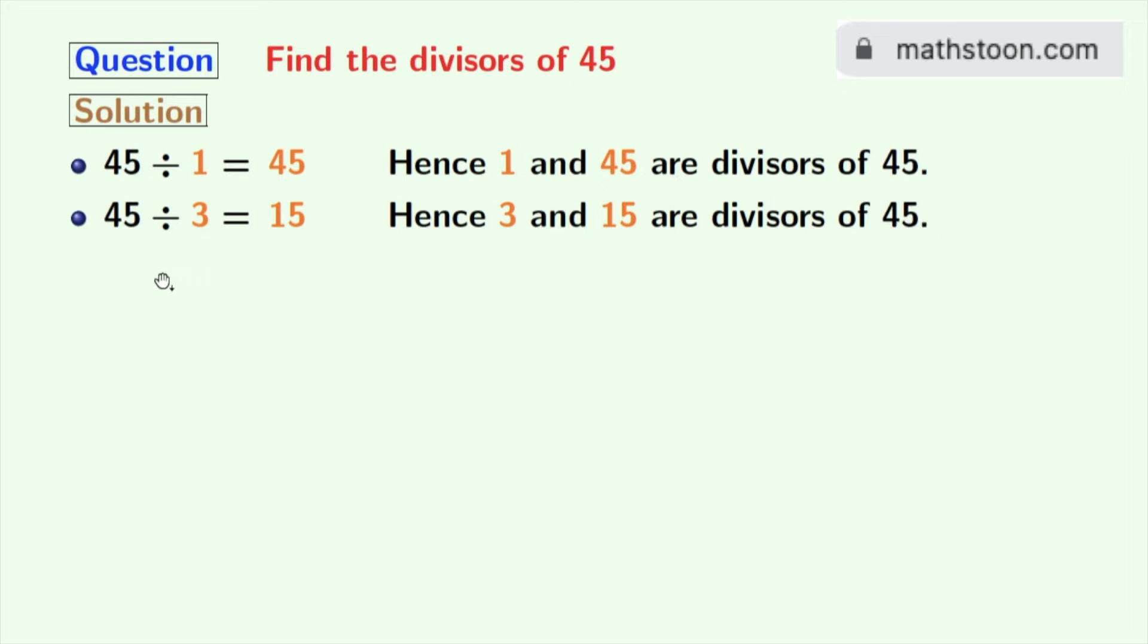Now the next number 4 does not divide 45, so we will try for 5. 45 divided by 5 is 9, so 5 and 9 are the divisors of 45.